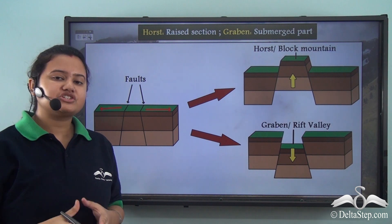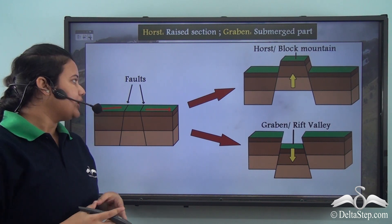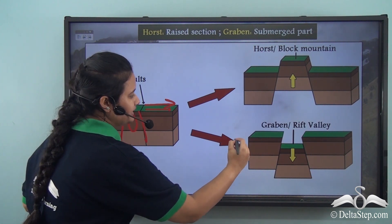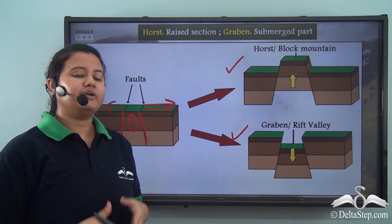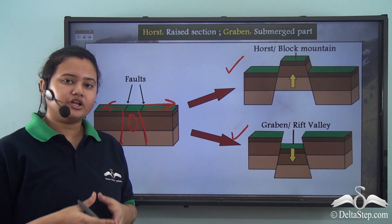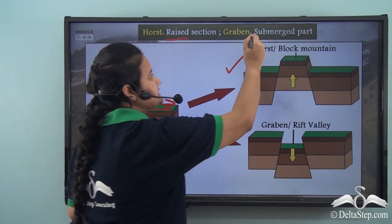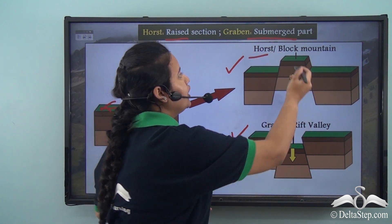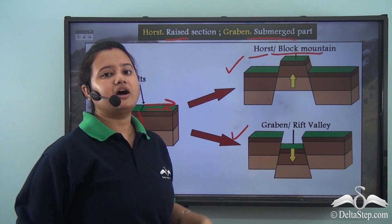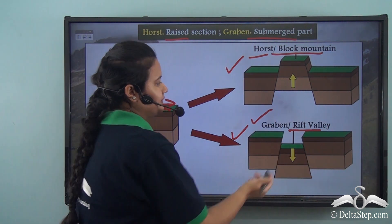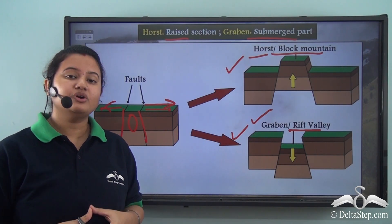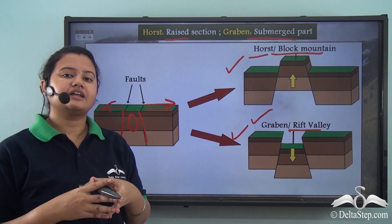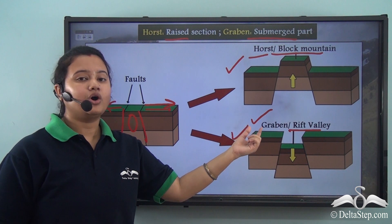When two plates diverge, the land between two fault lines either gets submerged or is raised up, forming block mountains. Due to this movement of tectonic plates, we have either a raised section or a submerged part of the earth's crust. The raised section is known as a horst or block mountain, and the submerged part of the land is known as a graben or a rift valley.